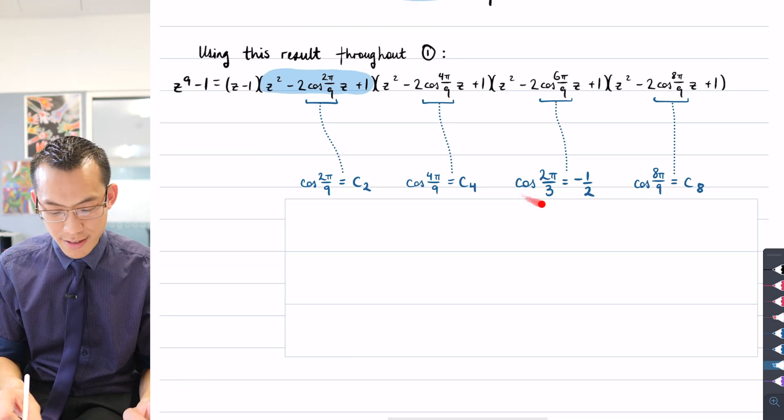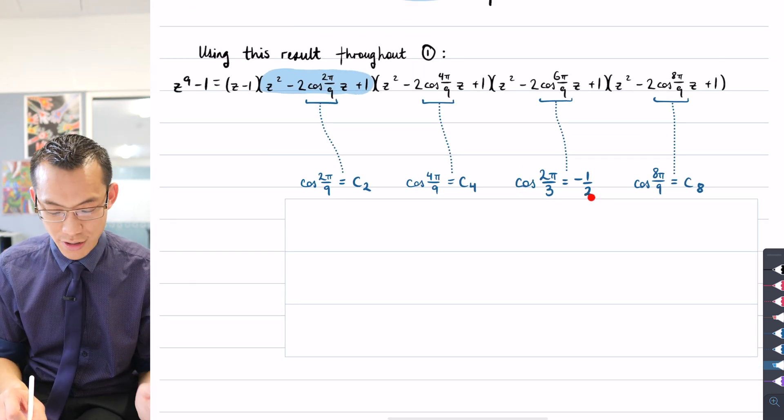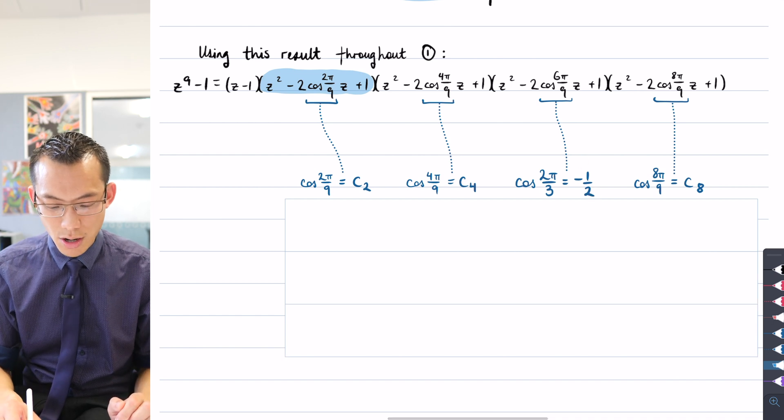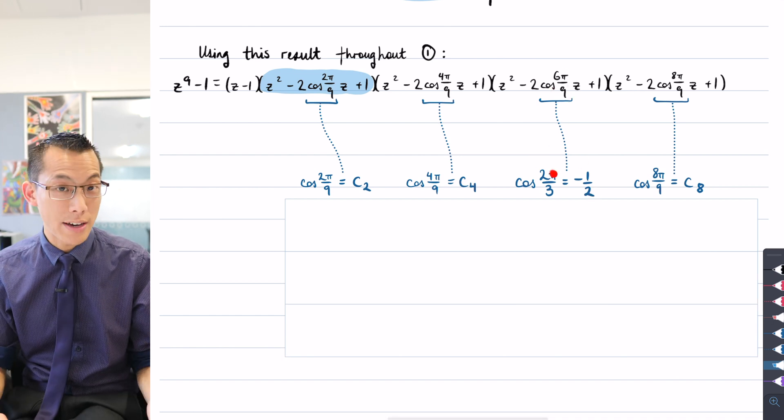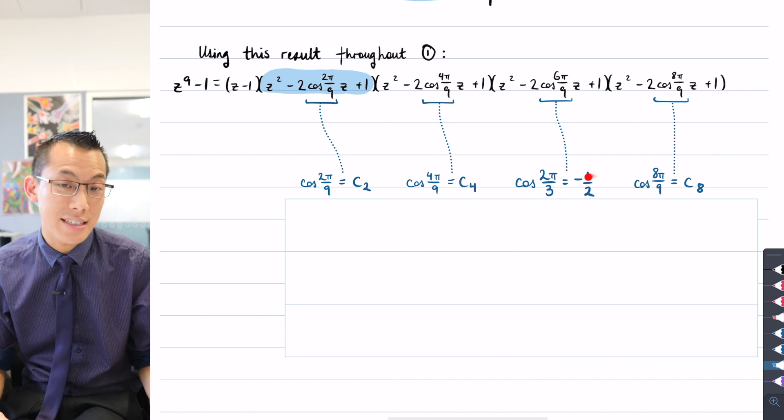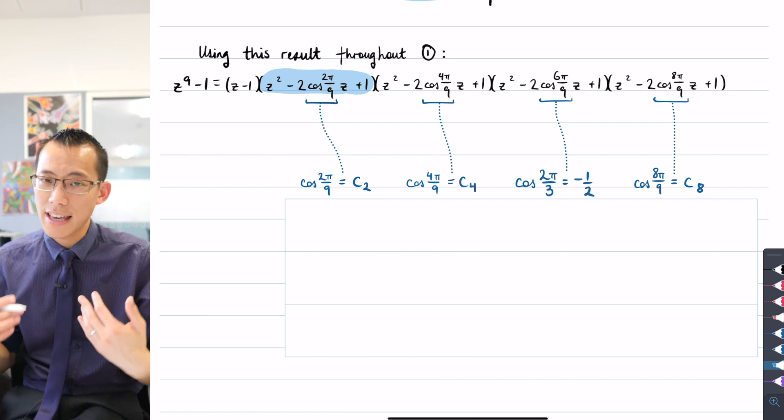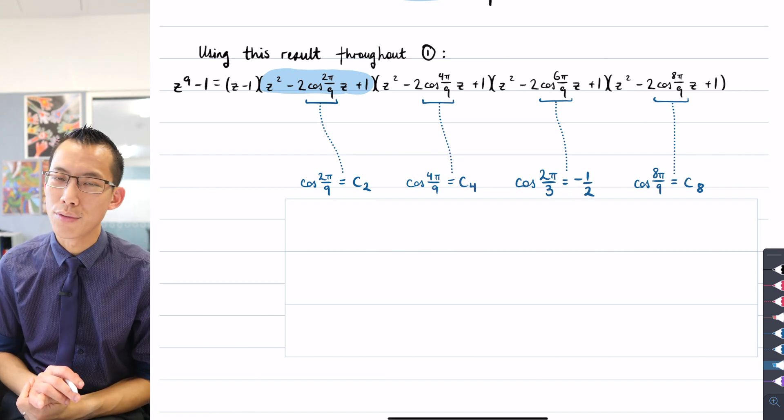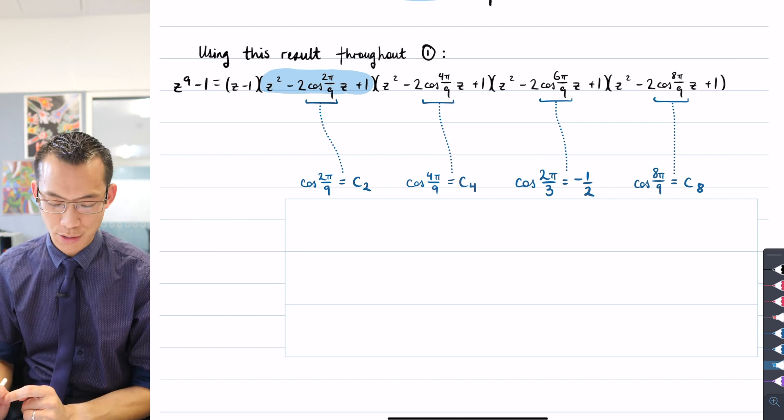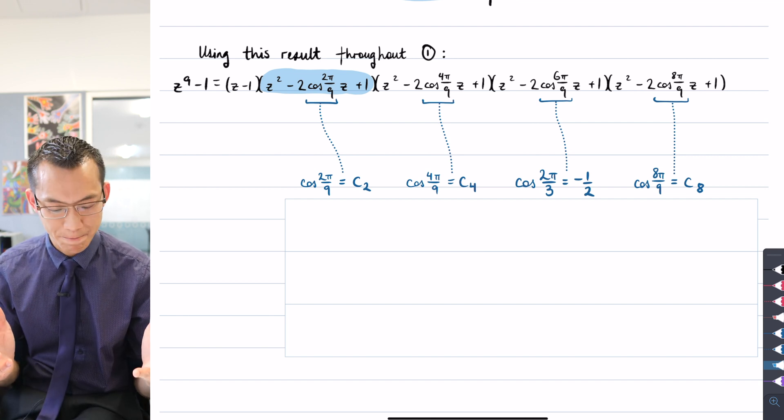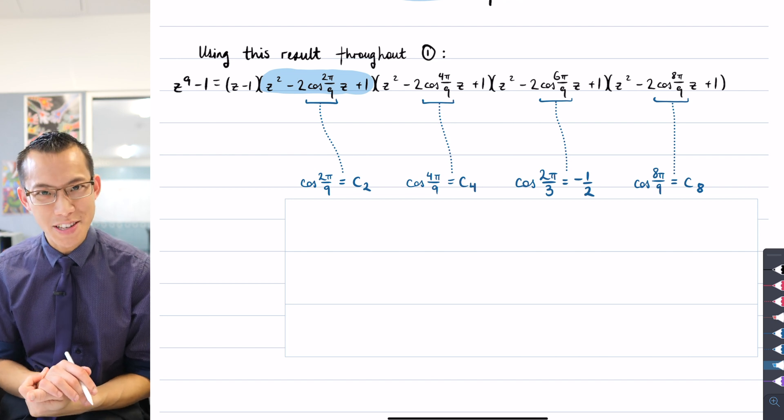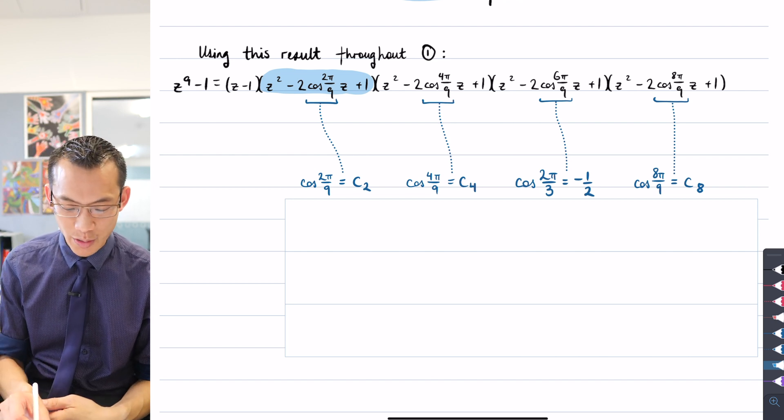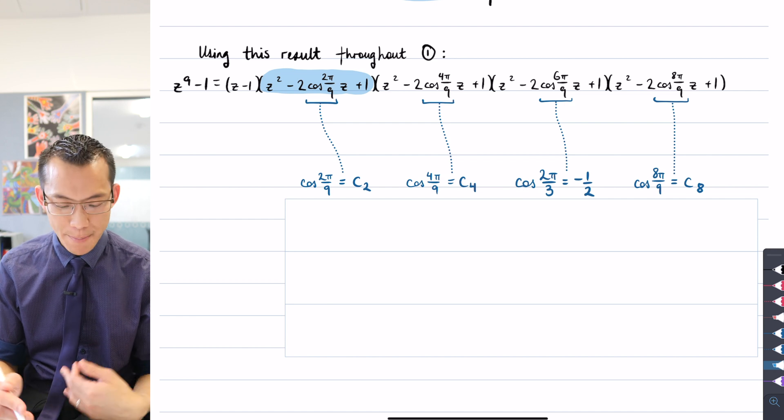Now you'll notice I haven't done that for this term in here, c6, I haven't named it that, because cos(6π/9), I can simplify that to cos(2π/3), and that's an exact value that I know. So this accounts for why in the result I'm trying to prove there are no 6π/9 terms, because you can just evaluate them. So now that I've introduced these new labels, c2, c4, and c8, and I'm also going to simplify this, what happens?